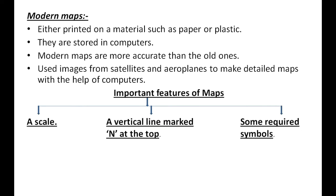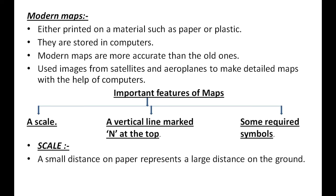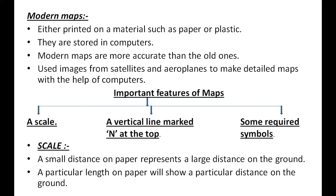A scale, a vertical line marked at the top, and some required symbols. Scale: A small distance on paper represents a large distance on the ground. A particular length on paper will show a particular distance on the ground.